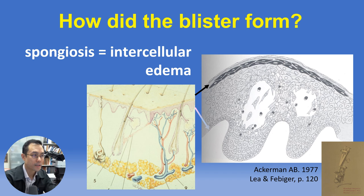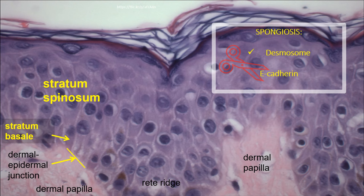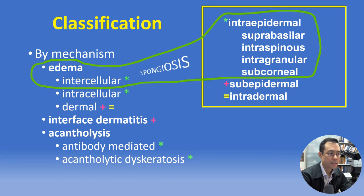Particularly on acral skin, the thick compact orthokeratotic stratum corneum holds spongiotic vesicles intact longer, making them more likely to be clinically visible as in dyshidrotic eczema. Associated with immune-mediated cleavage of E-cadherin, important for the actin cytoskeleton as part of the adherens junction, keratinocytes hold on until the last possible moment and you can often see intact desmosomes at the periphery of the spongiotic vesicles. In summary, intercellular edema within the epidermis or spongiosis creates intraepidermal blisters most commonly in the spinous layer.